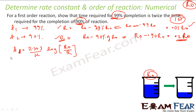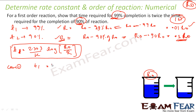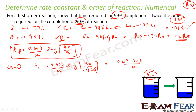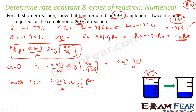This is the general formula for a first-order reaction. For case one, T₁ = (2.303 / K) × log(R₀ / 0.01 R₀) = (2.303 / K) × log(100) = 2 × (2.303 / K), since log 100 = 2. For case two, T₂ = (2.303 / K) × log(R₀ / 0.1 R₀) = (2.303 / K) × log(10) = 1 × (2.303 / K), since log 10 = 1.